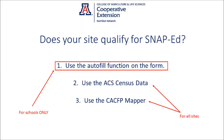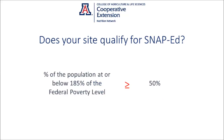If you are trying to qualify a school, a quick way to do it is to use the form itself. In order to qualify for SNAP-Ed, 50% or more of the students at the school need to be at or below 185% of the federal poverty level.